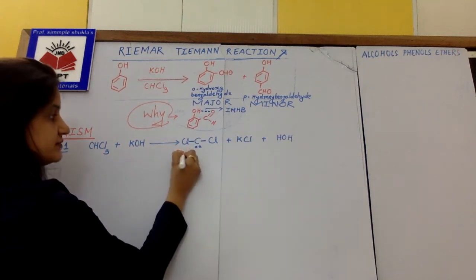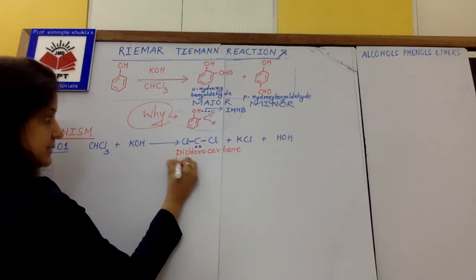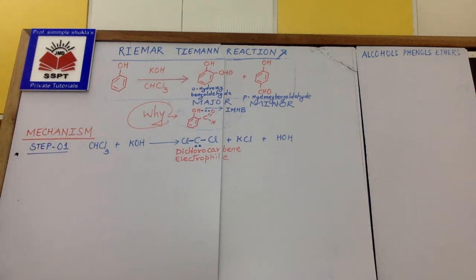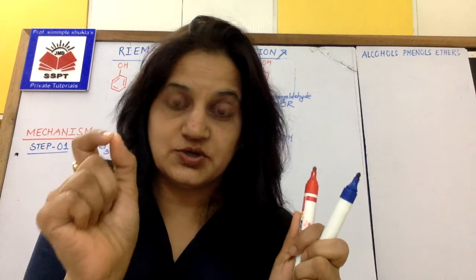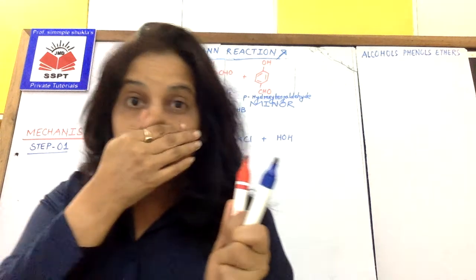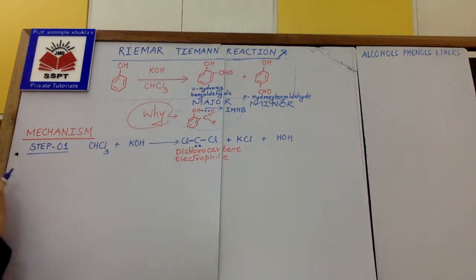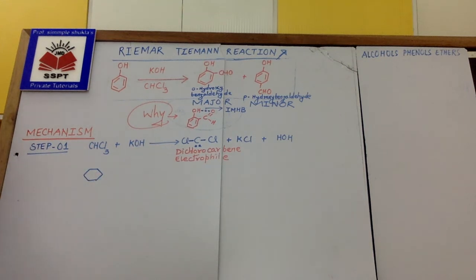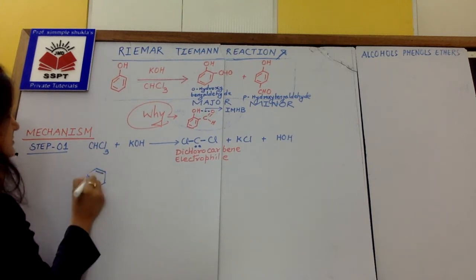This is a molecule of dichlorocarbene. It is an electrophile. This electrophile will attack benzene, but before it attacks, let's see how phenol participates in step one. Phenol here in the presence of base will convert to phenoxide.